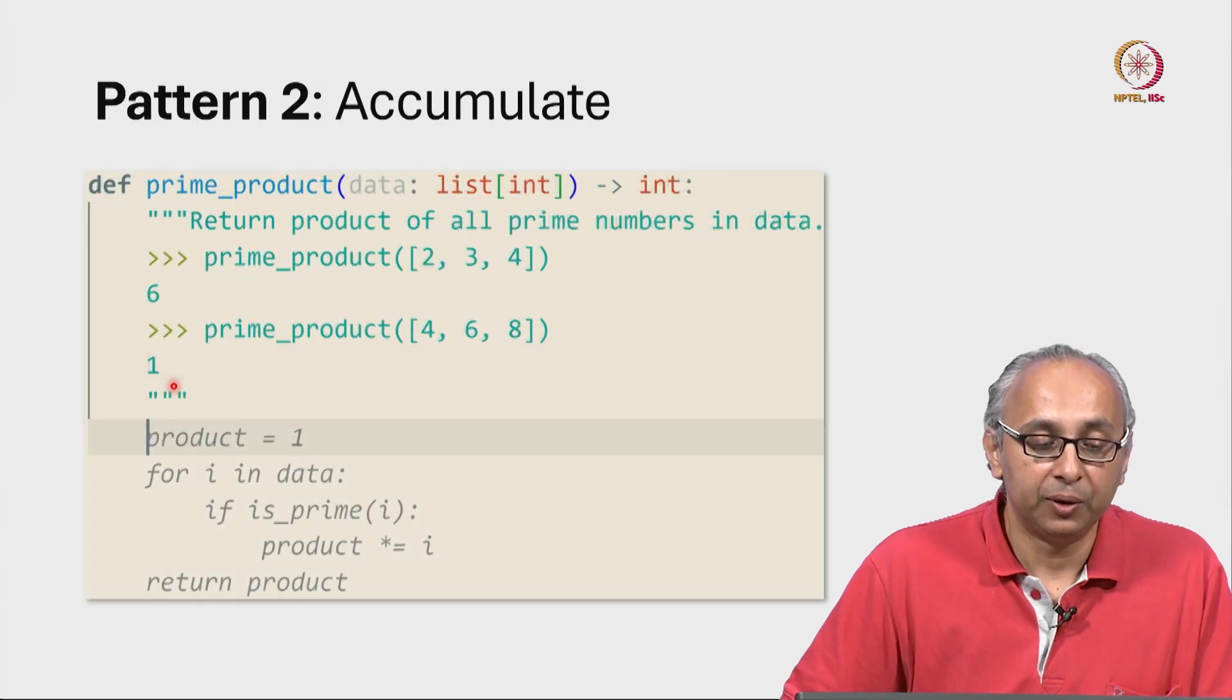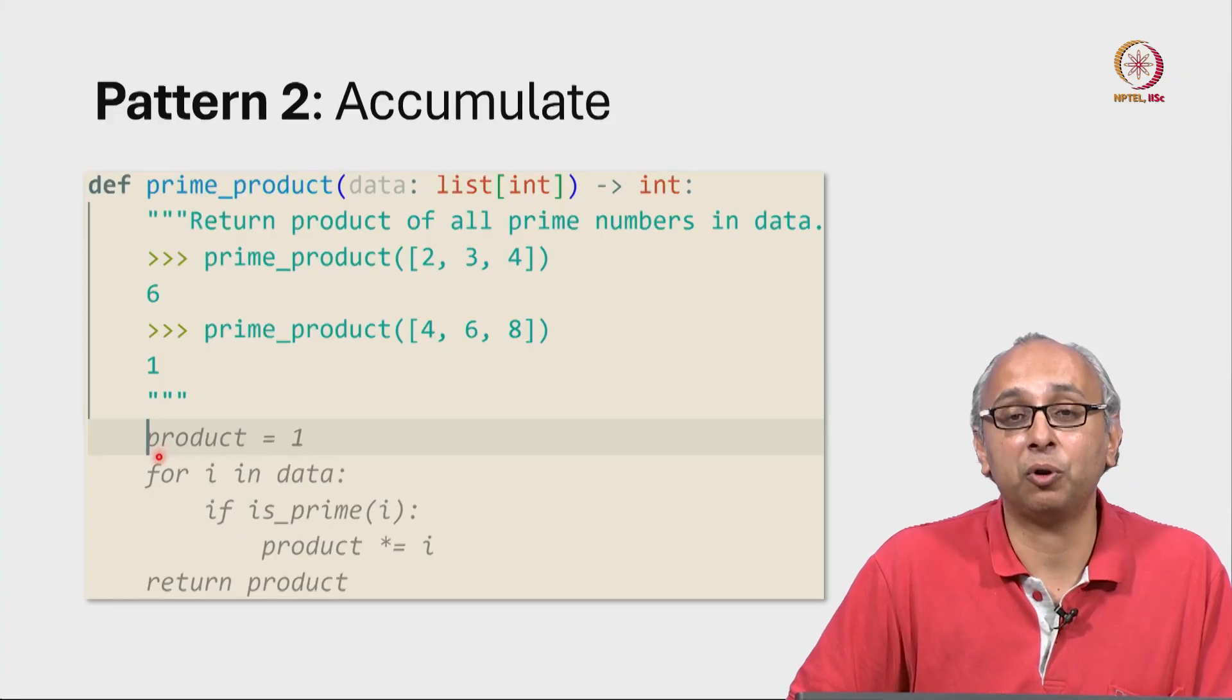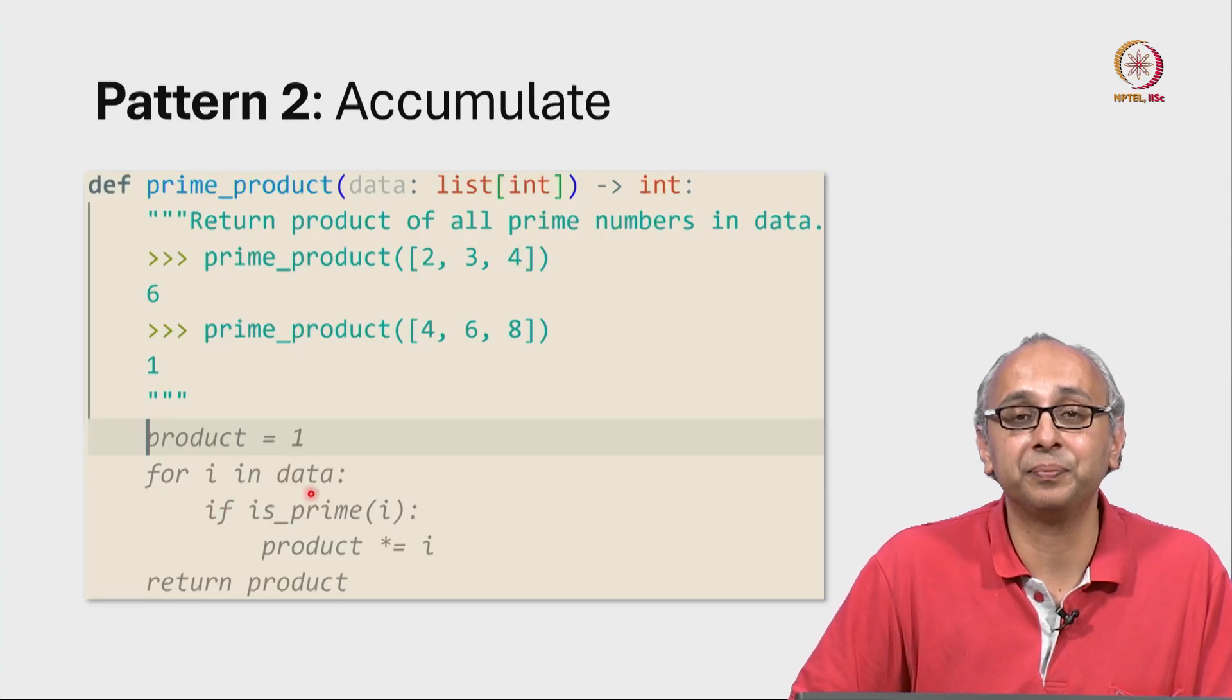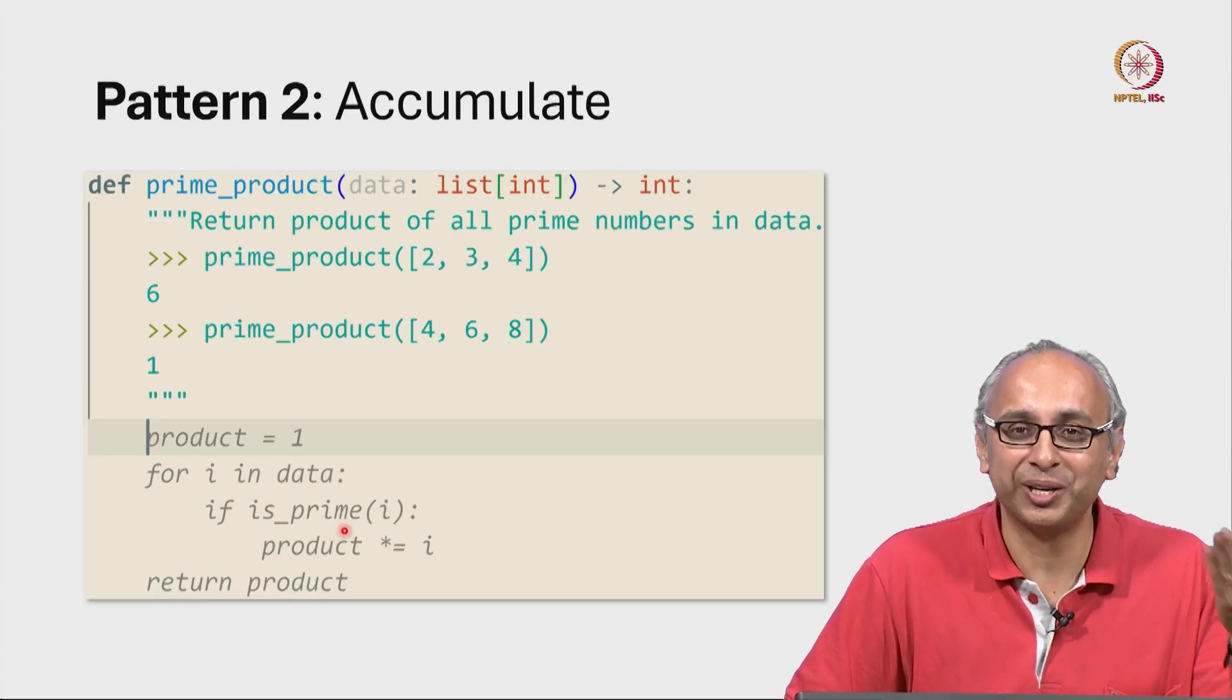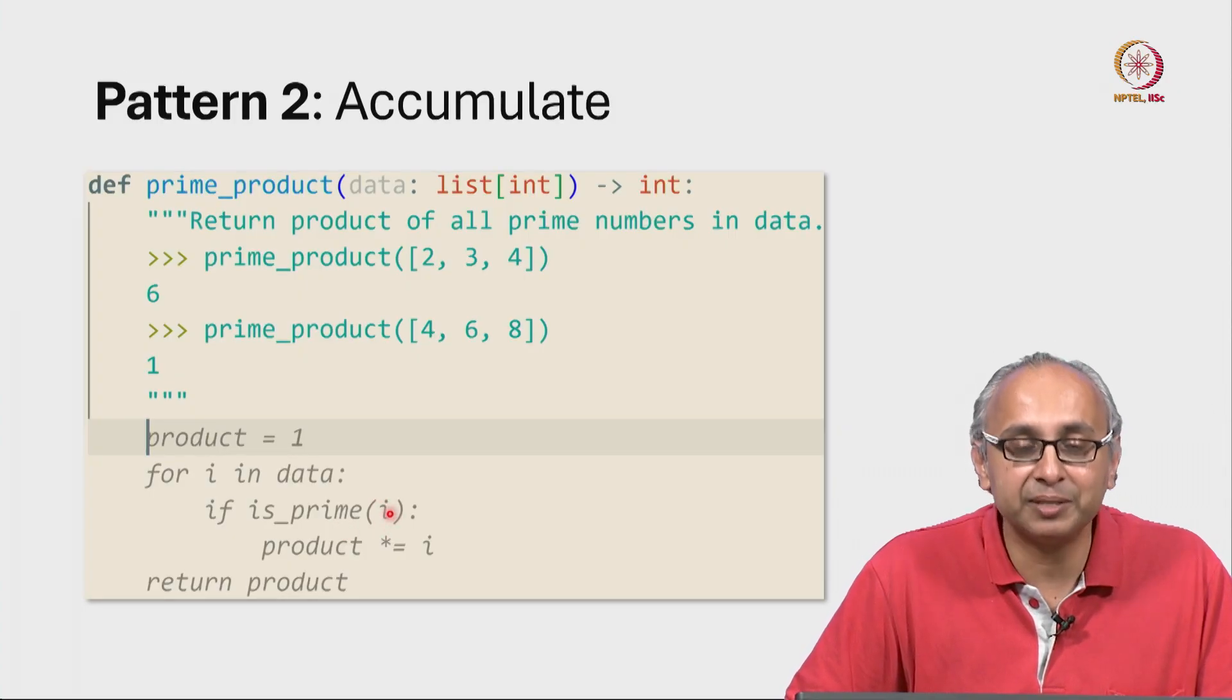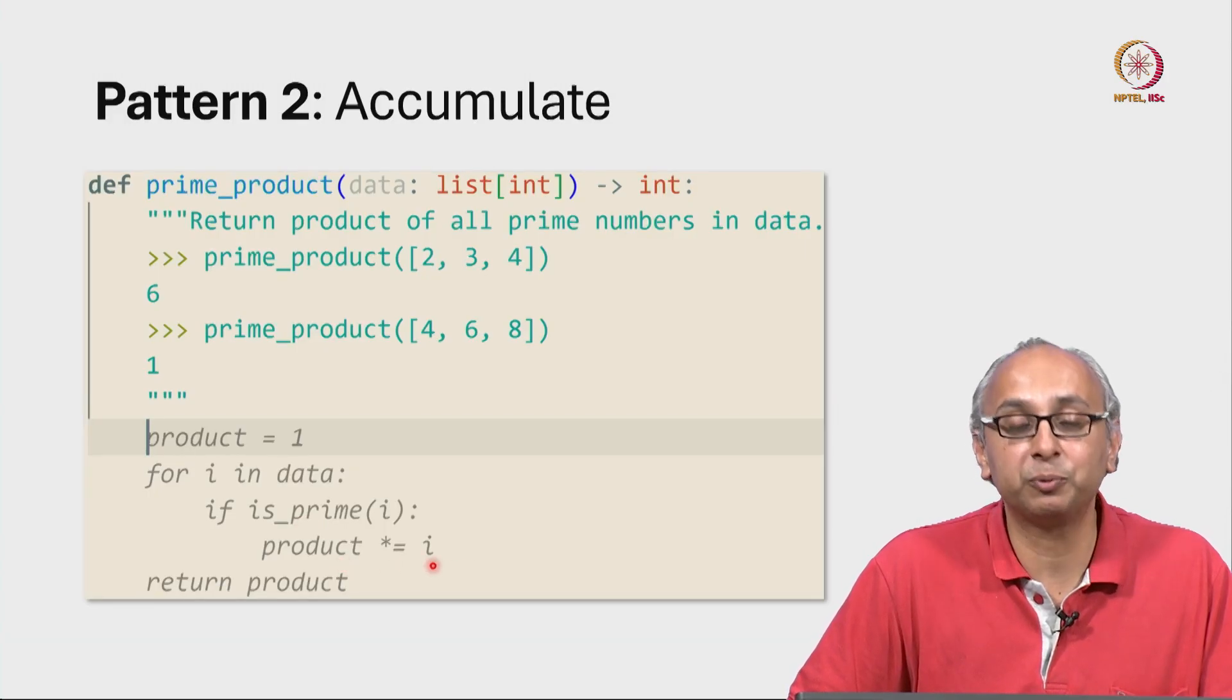Now with that hint, our AI is able to generate this code. We have a variable called product which we initialize to 1, and then we examine each item i in data. If that item i is a prime number, where is the isPrime function? Well it will be a helper function which we can write. So let's pretend that function is written. If this item i is a prime number, then we would multiply the product with i.